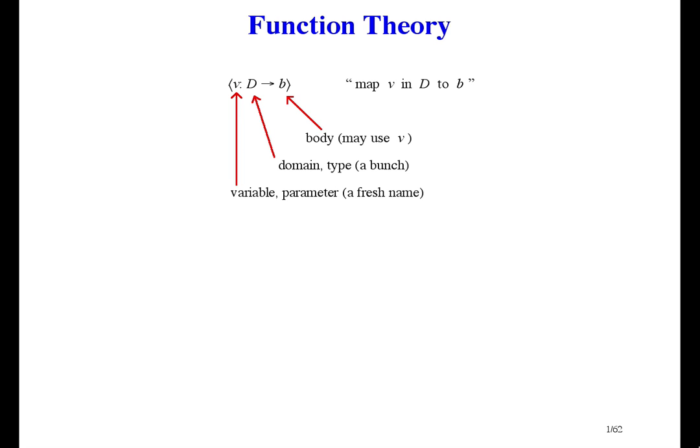A function introduces a new local variable, or you could call it a parameter if you want, and that's really the one and only purpose of a function. The angle brackets show the scope of that local variable, so we could call them scope brackets. D is the domain of the function, or you could say the domain of the variable, or the type of the variable.